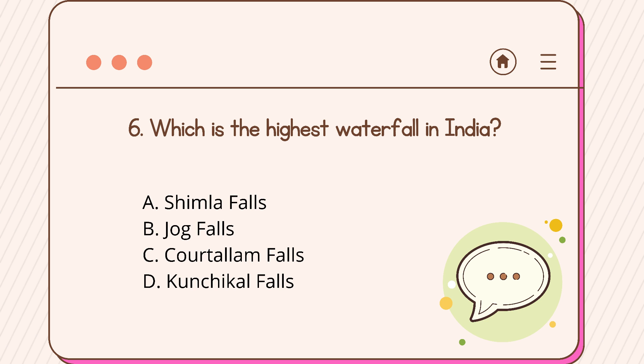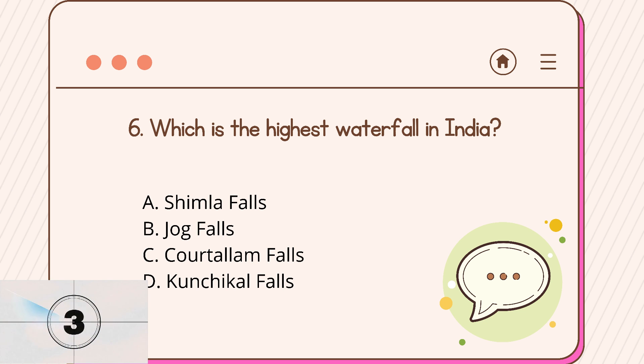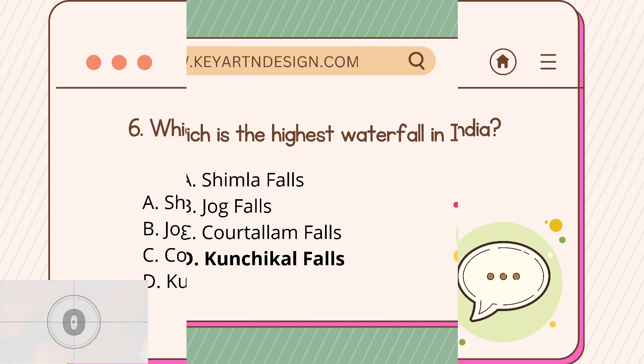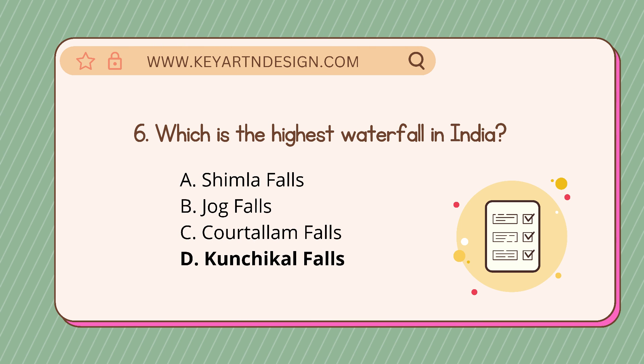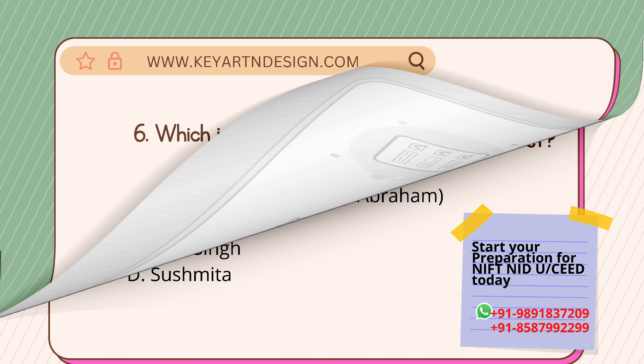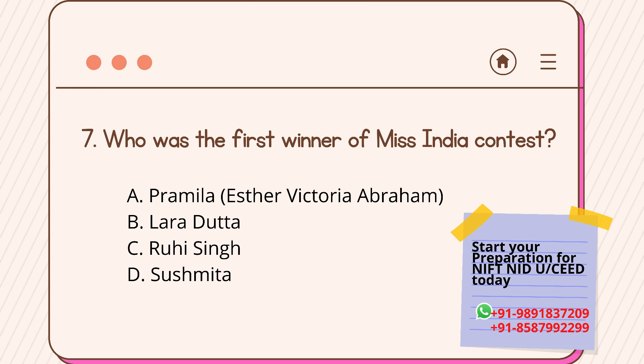Question number six: which is the highest waterfall in India? Option A: Shimla Falls, Option B: Jog Falls, Option C: Kotalam Falls, Option D: Kunchikal Falls. The correct answer is Option D, Kunchikal Falls.